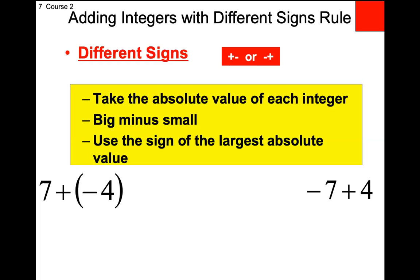Still starting with: same or different signs? Different. Does that mean add or subtract? Subtract. Subtract the numbers — seven minus four equals three. Did we have more positives or negatives? Positive. So the answer is positive three. Over here: same or different signs? Different. Subtract the numbers — seven minus four equals three. Did we have more negatives or positives? Negative. So the answer is negative three. The coin method and the rules both give the same result.